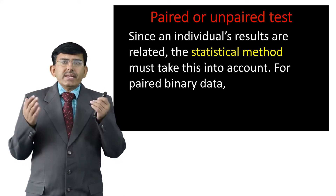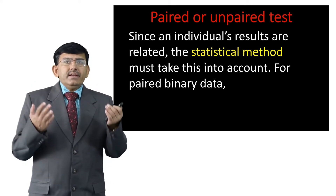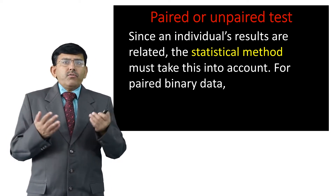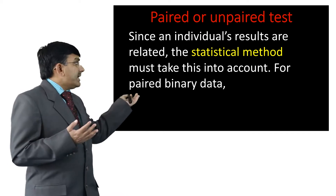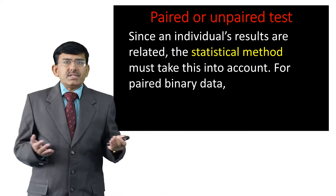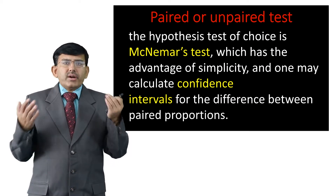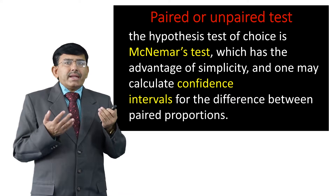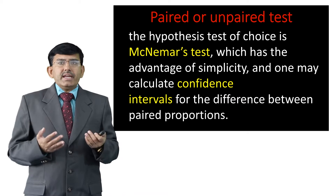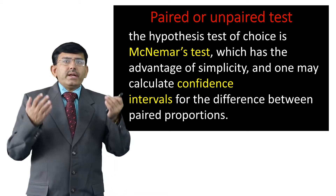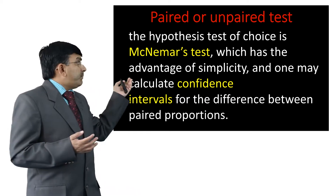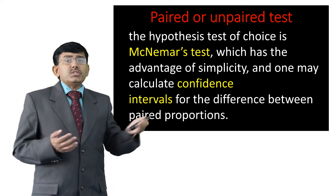Since an individual's results are related, the statistical method must take this into account. For paired binary data, which we get after processing of fundus images, the hypothesis test of choice is McNemar's test, which has the advantage of simplicity. One may also calculate confidence intervals for the difference between the paired proportions.